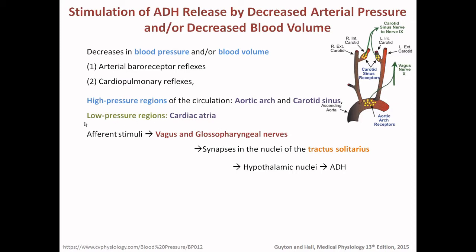There is also a low-pressure region in the cardiac atrium — the two chambers of the heart. When the pressure is low, it means water is less. This signal will go to the control center and initiate secretion of ADH to restore the water. Afferent stimuli from the baroreceptor go to the vagus and the glossopharyngeal nerves, then synapse in nuclei of the tractus solitarius area and the hypothalamic nuclei, from which ADH will be secreted.